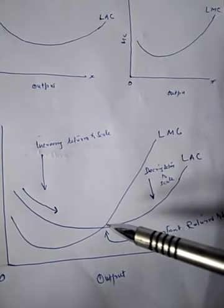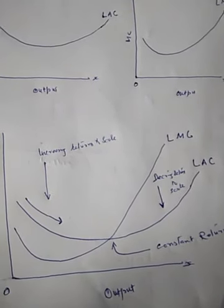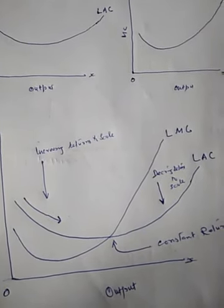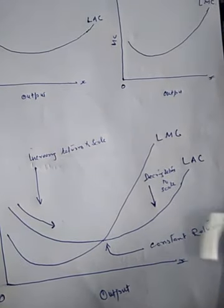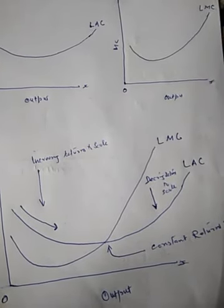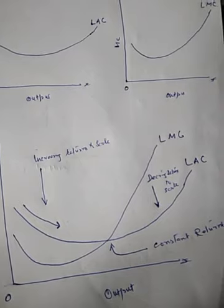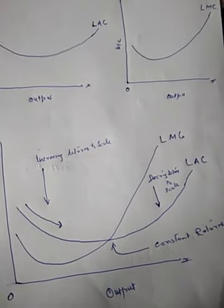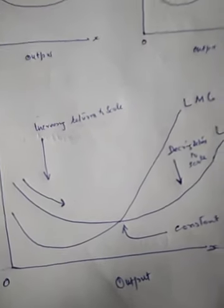The long-run marginal cost curve cuts the long-run average cost curve from below. However, there are certain points of difference between the short-run and the long-run cost curves. Long-run cost curves are relatively flatter than short-run cost curves — refer to the previous lecture to compare. This is because over a long period of time, a firm can add any number of plants or shift from one scale of production to another, while in the short run this is not possible. The long-run average or marginal cost curves are U-shaped, not because of the law of variable proportions, but because of economies and diseconomies of scale.